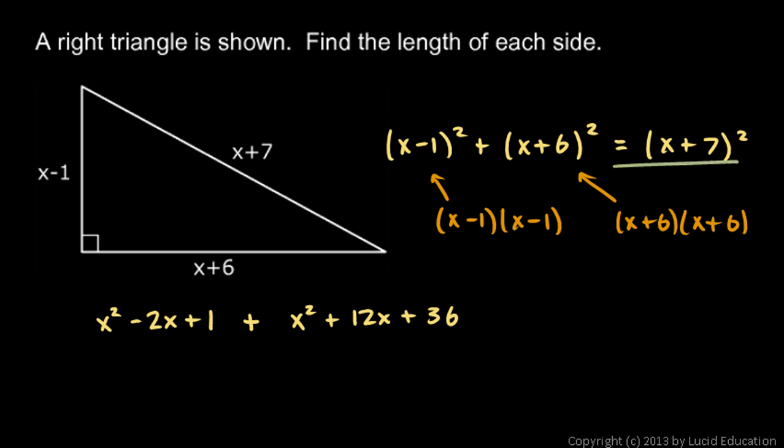And then this equals x plus 7 squared. So I'll write equals, and x plus 7 squared is x plus 7 times x plus 7, and that works out to x squared plus 14x plus 49.